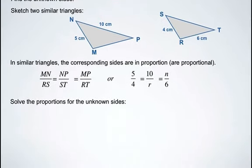Now we're going to solve the proportions for the unknown sides. To solve for r, we'll take this section: 5/4 = 10/r. We need to cross multiply to get r by itself and solve this proportion.